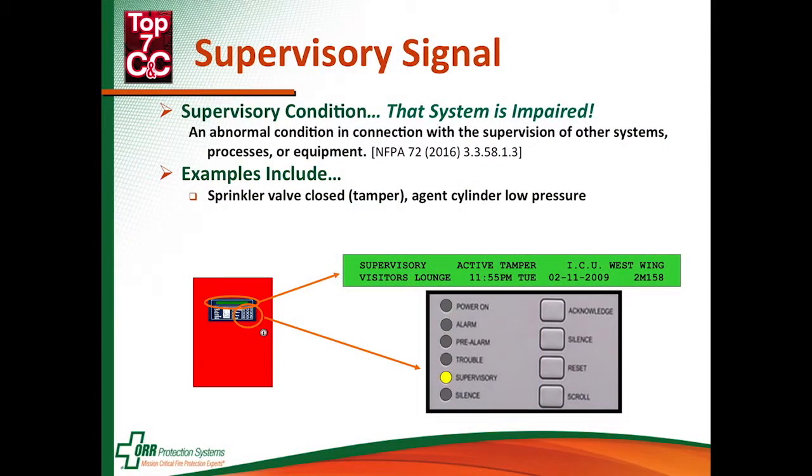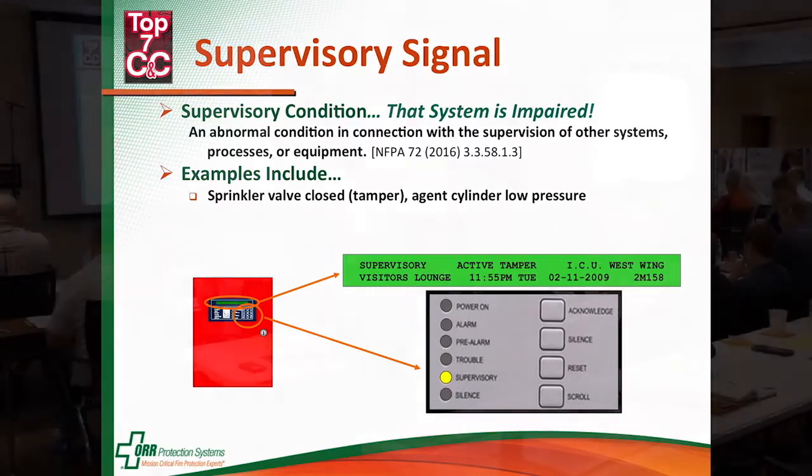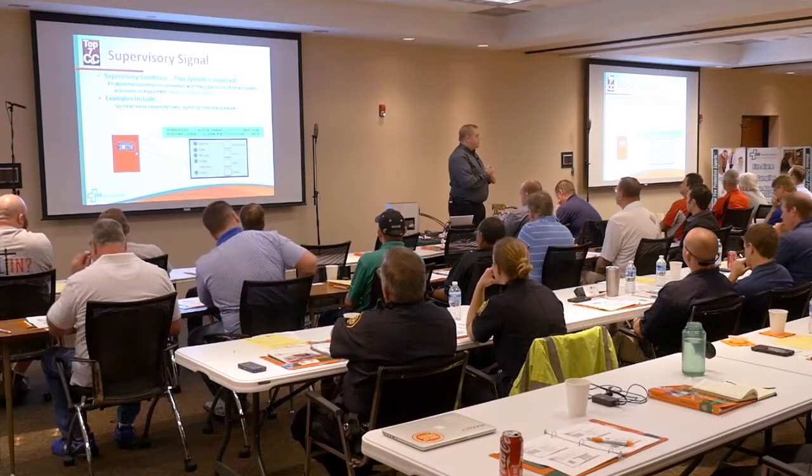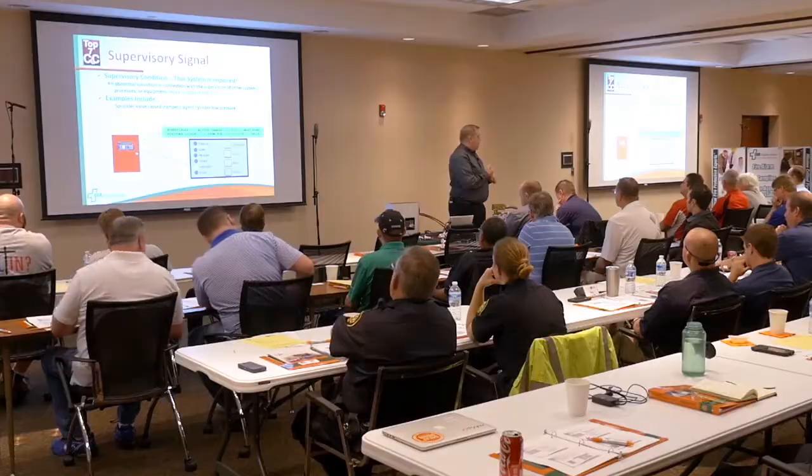Supervisory conditions — we use fire alarm systems to monitor other systems in the building. The best example is a sprinkler system. We supervise the sprinkler system via tamper switches or monitor switches on valves to make sure those sprinkler valves are in the correct position. When we talk about suppression systems, we look at pressure switches to make sure the tank pressure is correct. I've even seen a hospital example where they used the fire alarm system to monitor the temperature in a blood cooler — if it got too hot, it brought in a supervisory signal at the panel, used as a monitoring device, which is allowed by the code.